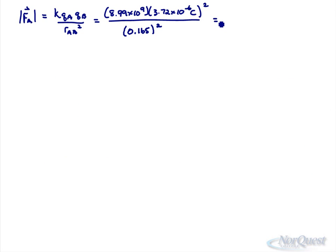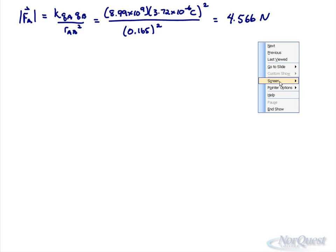Punch that in on your calculator and leave it to as many places as possible. 8.99 to the exponent 9 times, again, make sure you bracket 3.72 to the exponent negative 6 squared divided by 0.165 squared. I typically see students do the substitution right but make a mistake in their punching in the calculator. So I get 4.570 newtons.